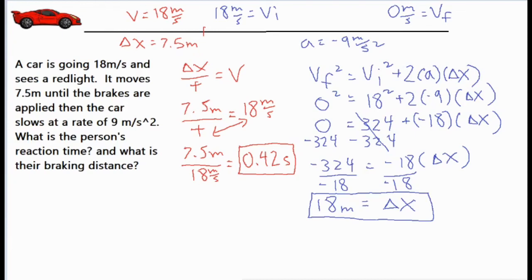So what I did is I put in the zero over here. Zero squared equals zero, so my whole left side of the equation is zero. You have 18 squared, which is 324, plus two times that negative 9. So that negative 18 times delta x. So I scoot that 324 over to the opposite end and I have negative 324 equals negative 18 times delta x. Finish off by dividing both sides by negative 18, and I have a final answer of 18 meters.